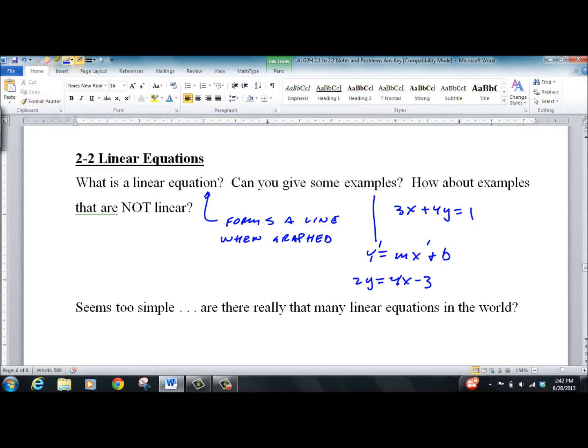Those are all linear. Some examples of non-linear would be y equals 1 over x, also known as xy equals 1, y equals square root of x, y equals x squared. These are all non-linear. And when you graph them, they won't form a straight line. Hence the reason we use the word linear.